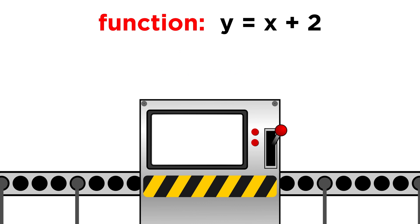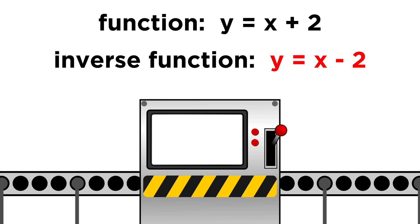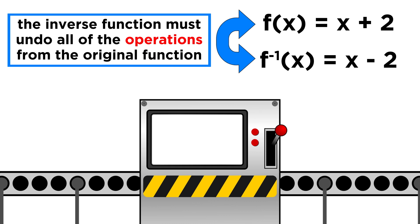For example, if we have y equals x plus two, then these swap places. We subtract two from both sides, and y is equal to x minus two. This is a totally new f(x), which we express as f inverse of x, with a negative one superscript after the f. This makes sense, because the inverse function must undo every operation that the original function did. So if f(x) adds two to any input, f inverse of x must subtract two from any input.